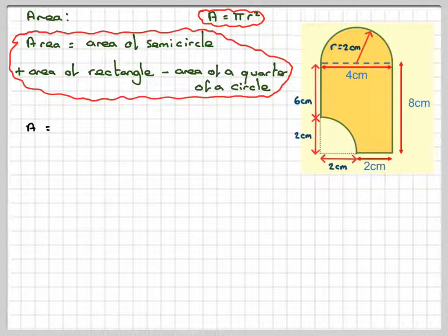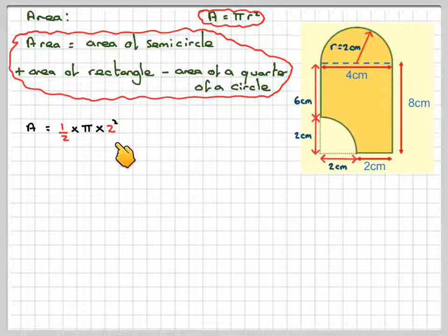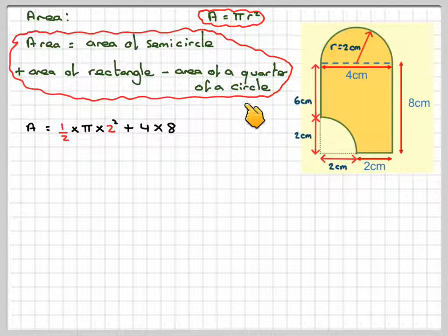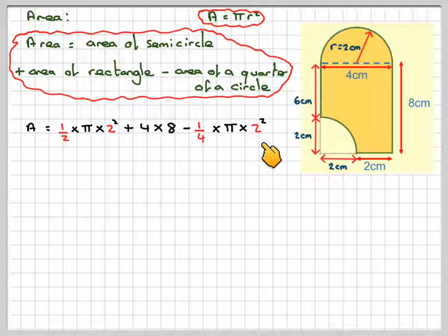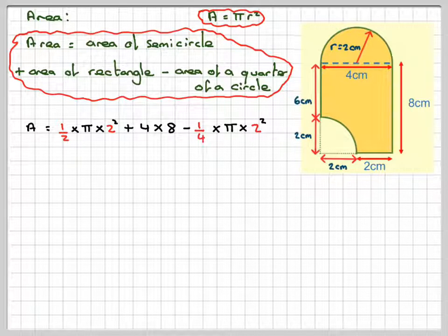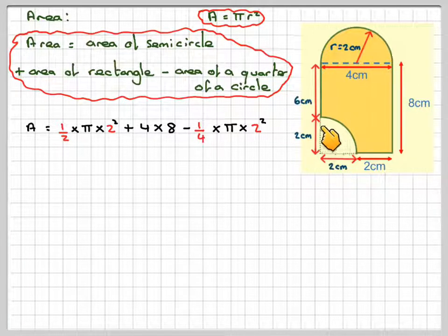So, we're going to have the area is 1/2 × π × 2², plus the area of the rectangle, which is 4 × 8, minus the area of a quarter of a circle, minus 1/4 × π × 2². Just to repeat, we found the area of this semicircle, the area of this rectangle, and we've taken away the area of this quarter of a circle.